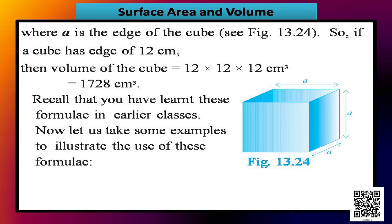For example, if a cube has an edge of 12 centimetres, then the volume of the cube is 12 into 12 into 12 centimetre cubed, that is 1728 centimetre cubed.